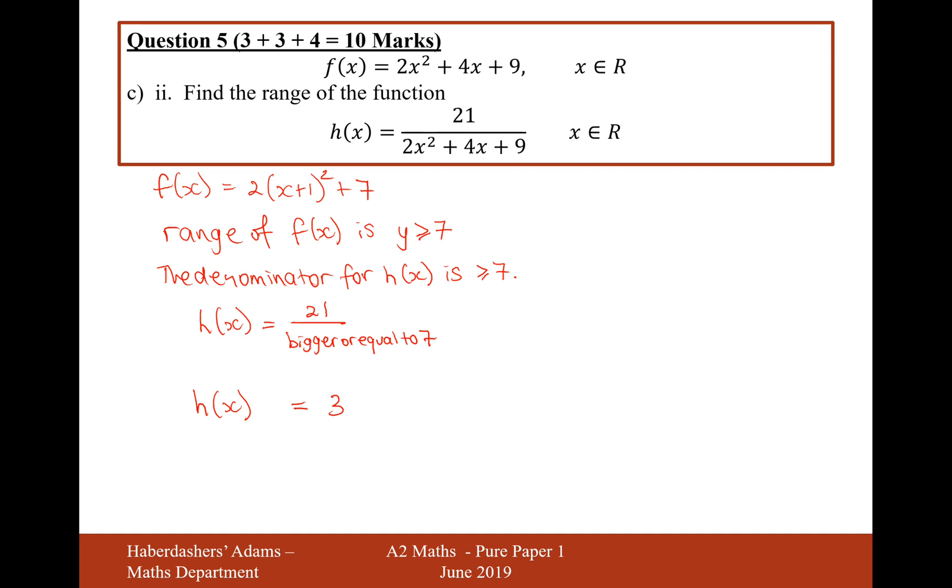Then when the denominator increases, the total value for h is going to go smaller. So let's say it now goes up to, the value of this denominator goes up to 21. It's now going to be 21 over 21, which will be 1. So it's going to be 3 or smaller down to 0.